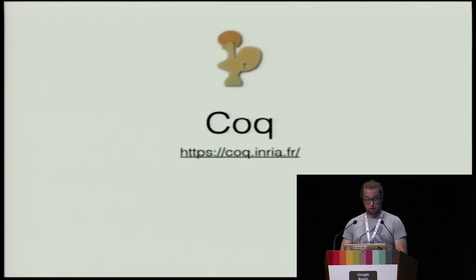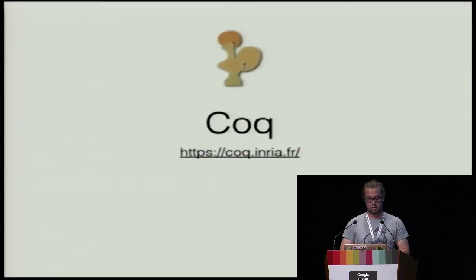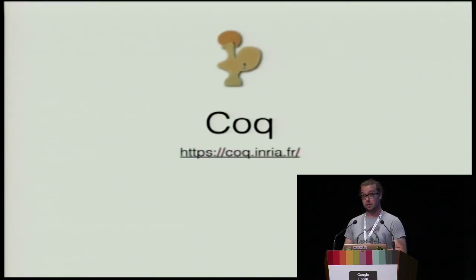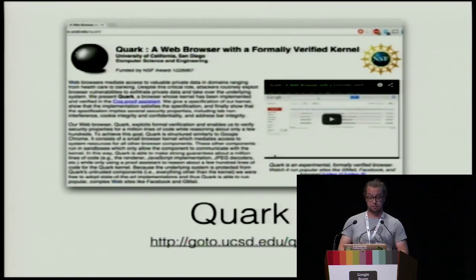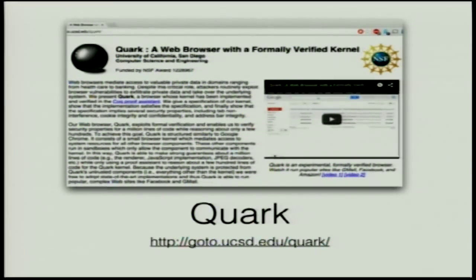I also want to mention Coq, which is an interactive theorem prover written in OCaml. It's over 26 years old and is a dependent type functional language. There's a web browser called Quark written in this language, and its kernel has been formally verified by Coq. This means it should be nearly bug-proof — no buffer overflows or bugs related to the type system.